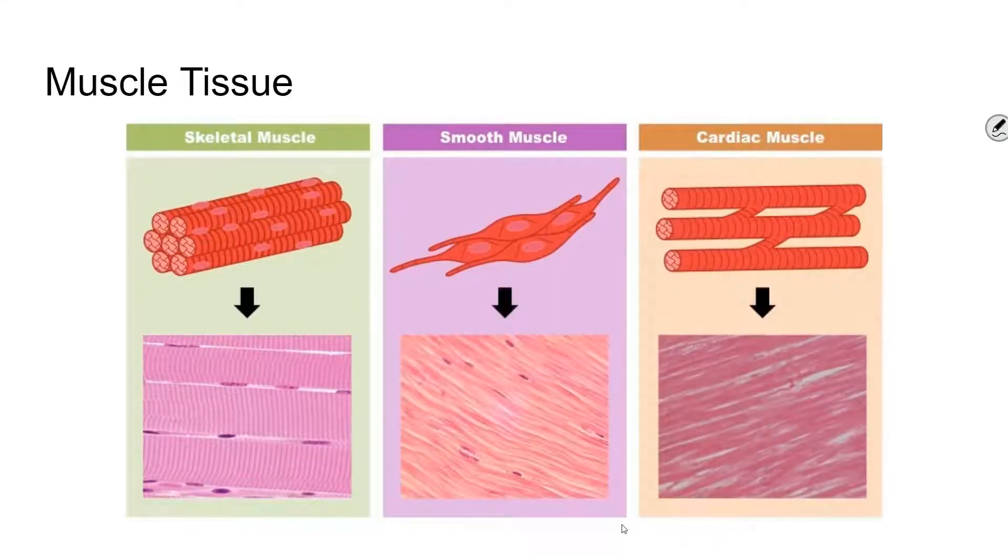However, there are three different kinds of muscle tissue that we're going to look at, and there they are: skeletal muscle, smooth muscle, and cardiac muscle. We'll go through each one individually.